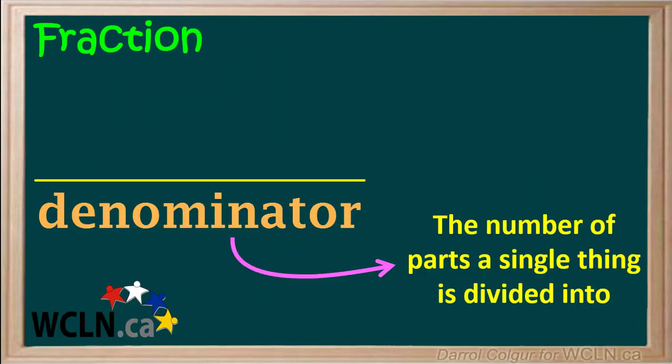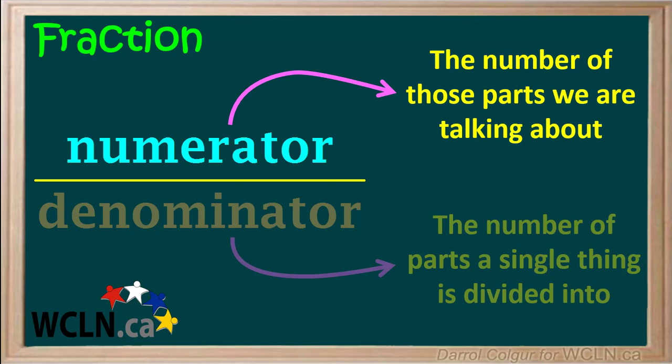To review, the denominator, or the number on the bottom of a fraction, tells us how many parts a single thing is divided into. And the numerator, or the number on top of the fraction, tells us the number of those parts we're talking about.